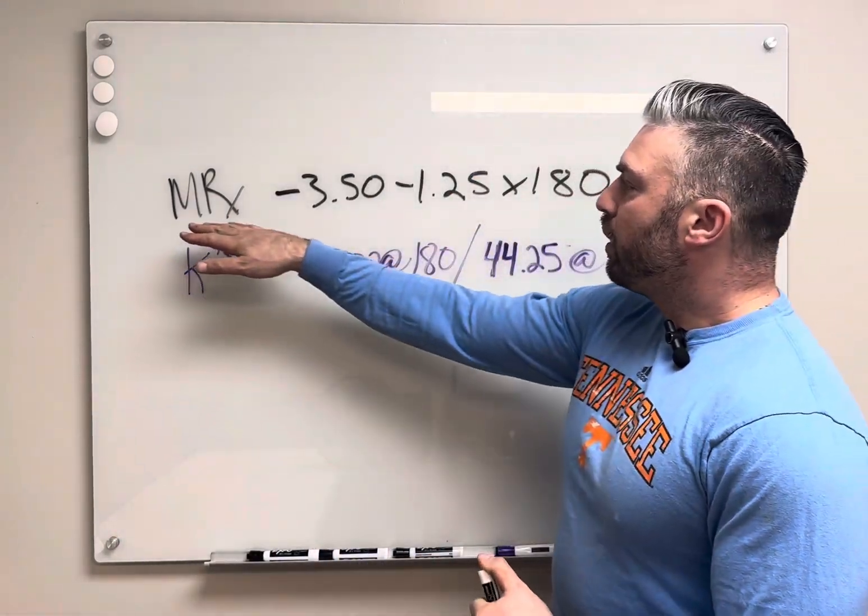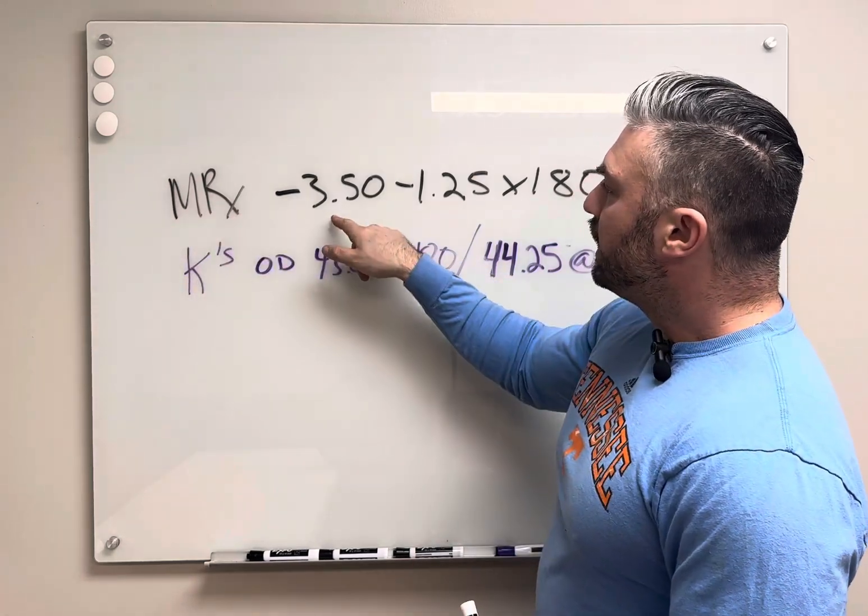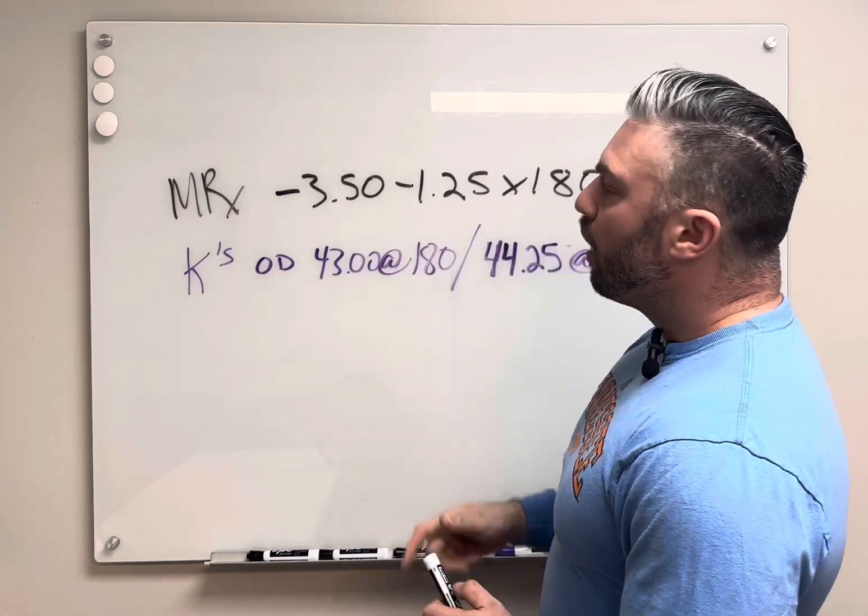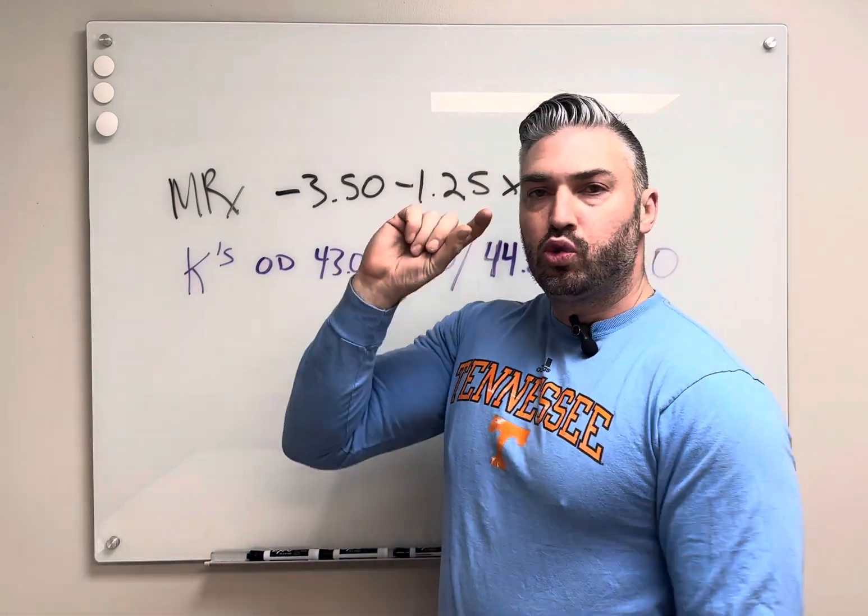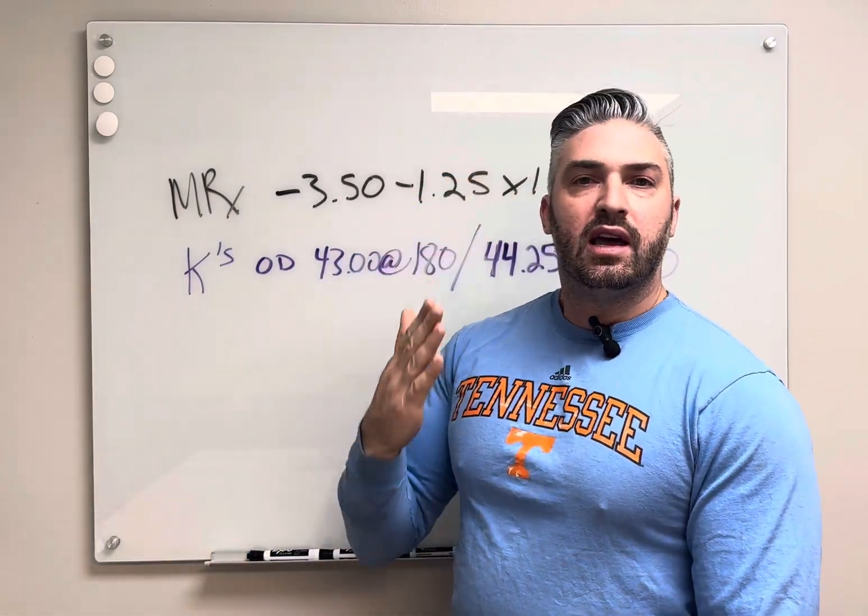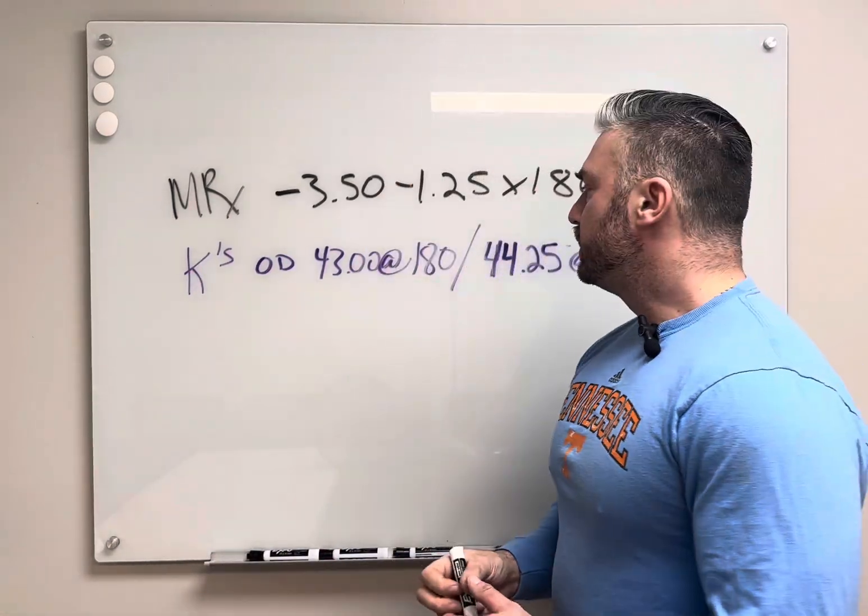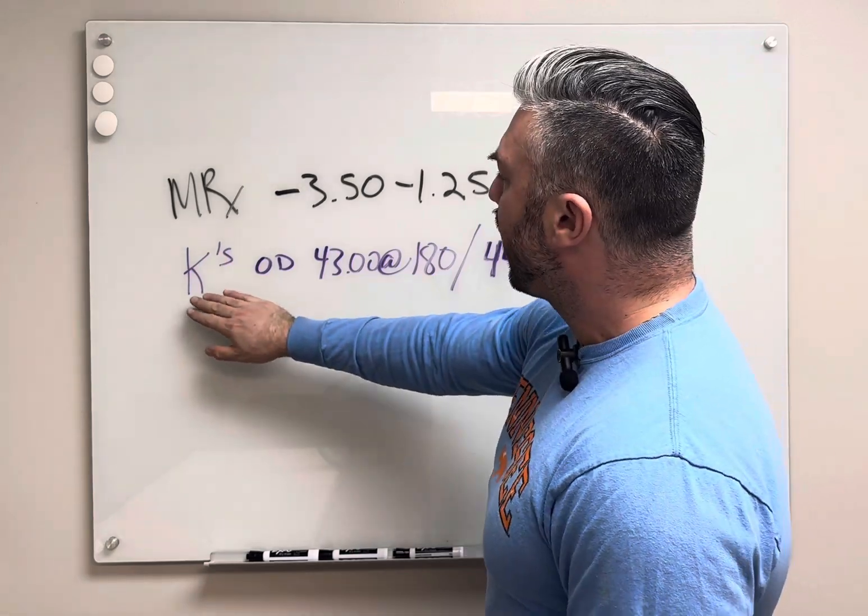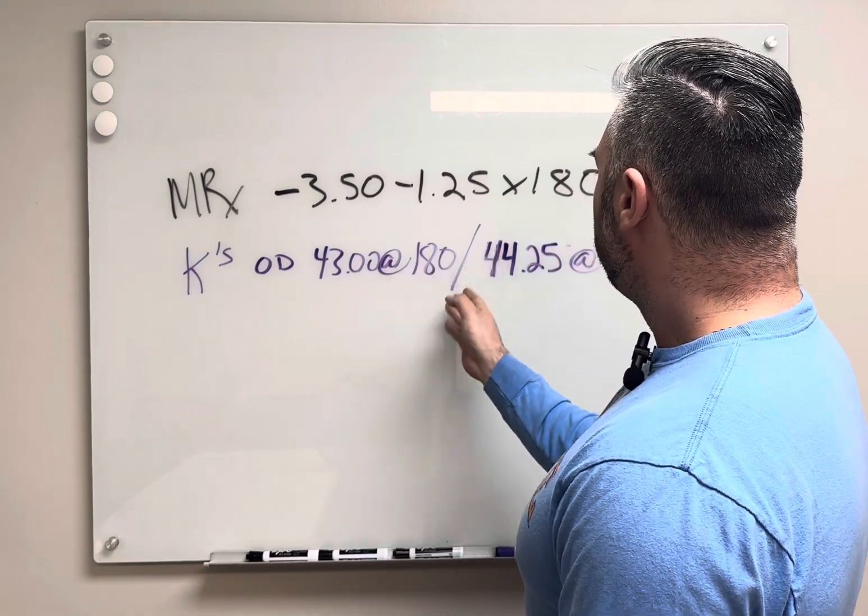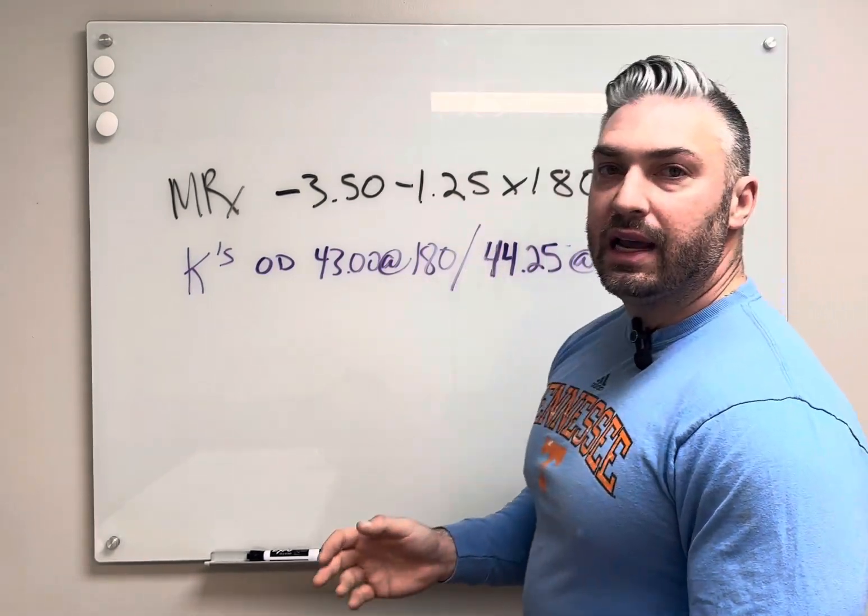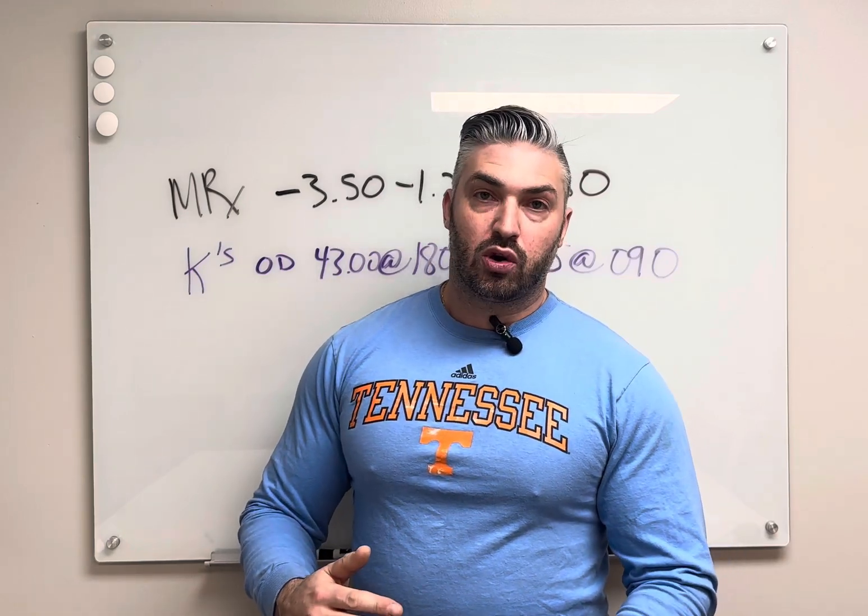I wrote on the board here. We have our refraction, our manifest refraction: minus 3.50 minus 1.25 at 180. So that is the prescription. Typically it's refracted from a 12 millimeter distance between the eye itself and the phoropter. When we talk about vertex distance, that's what we're considering. And then we have some K readings here. For the right eye, we have 43 at 180 by 44 and a quarter at 90. K readings show the steepest and the flattest meridian of the cornea.